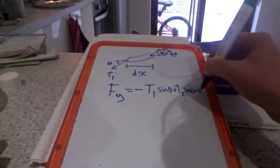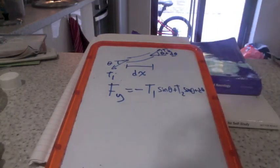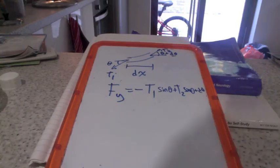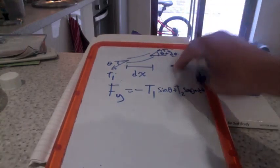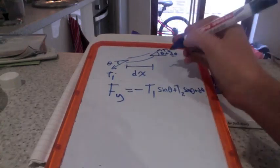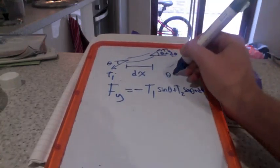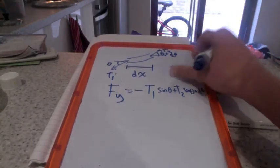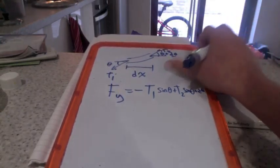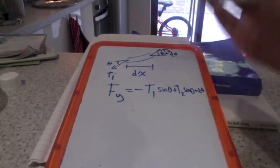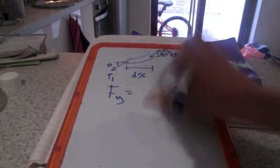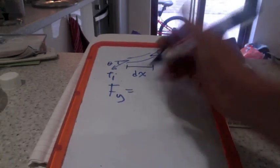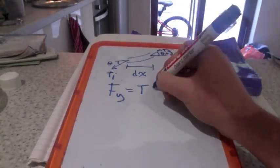We're using small angle approximation and working in radians. By these rules, it makes sense to say theta is roughly equivalent to sine of theta. Remember, we're working with the infinitesimal, so it's not actually that sloppy to assume this.